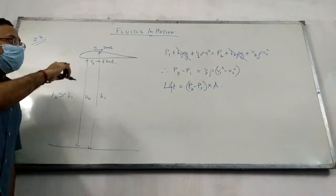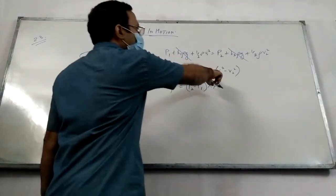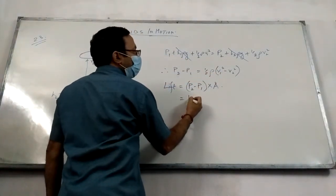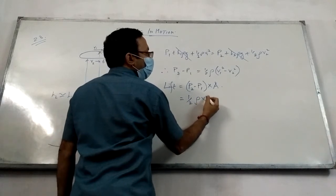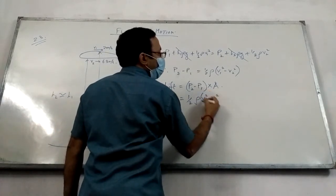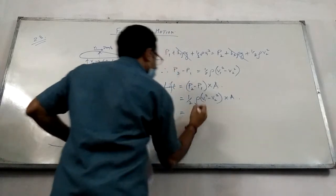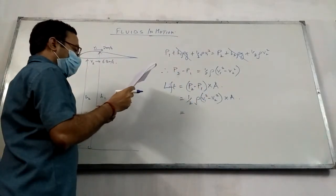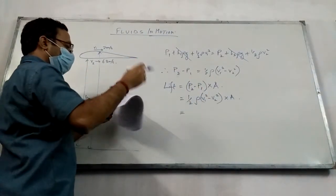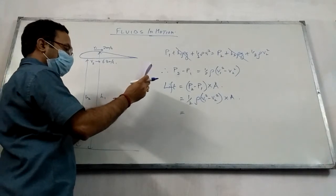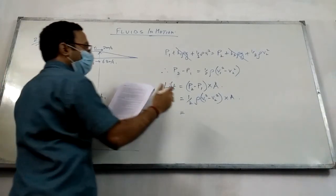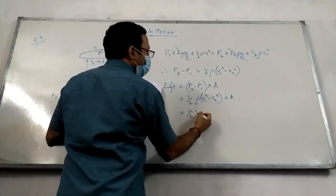So pressure is P2 minus P1 into the area of the plane. P2 minus P1, the value we already found, times the area of the wings 2.5 meter square and density of air 1.3.